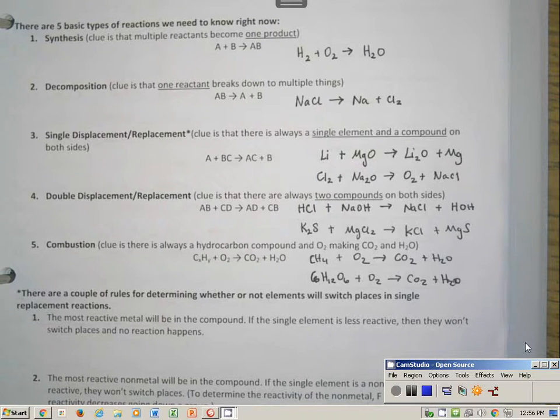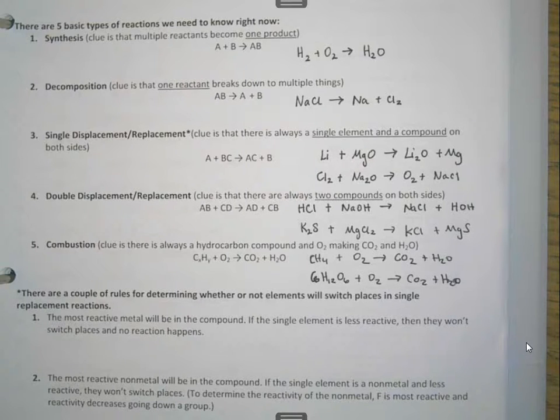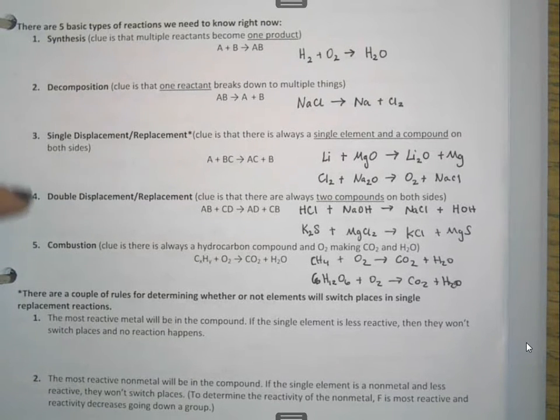Okay, this video I'm going to talk about types of reactions. There are five basic types of reactions that we need to know in high school chemistry. You have synthesis, decomposition, single replacement, double replacement, and combustion.